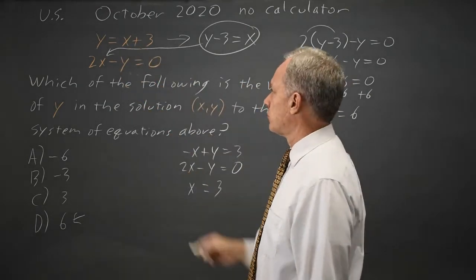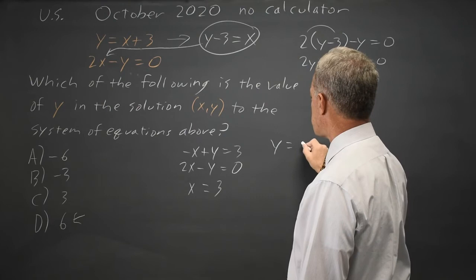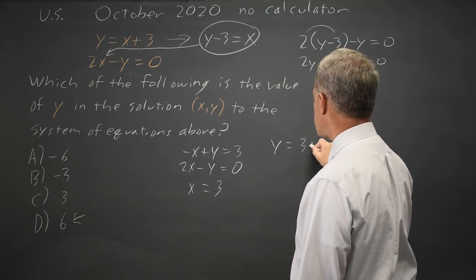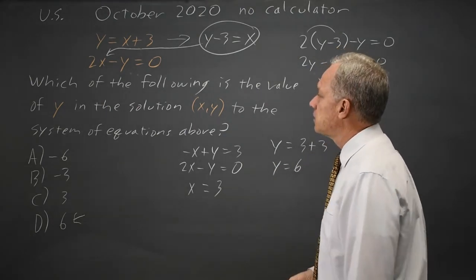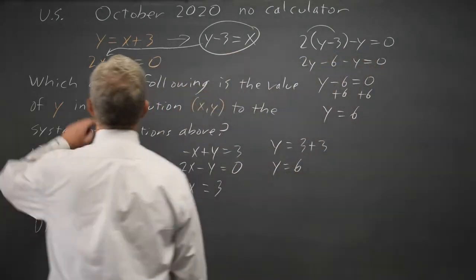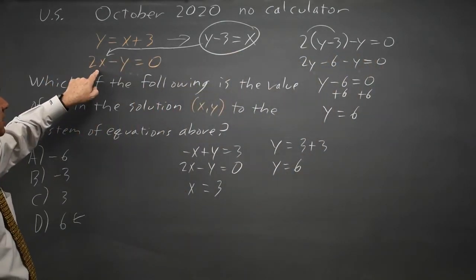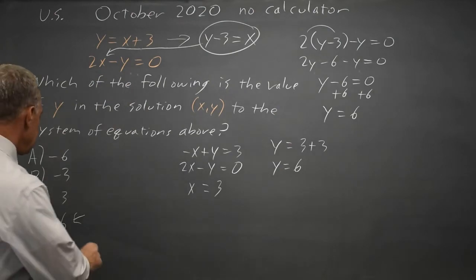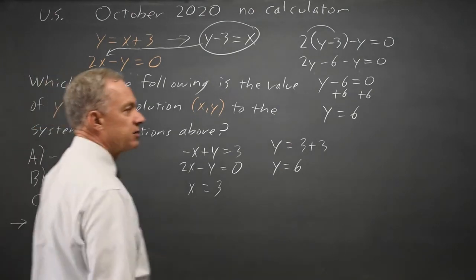Substitute that value of x into our first equation, and y equals x plus 3 is y equals 3 plus 3, gives us y equals 6. I can check that in the second equation. Twice x is twice 3 is 6, minus 6 is 0, so that does work. Answer is choice D again.